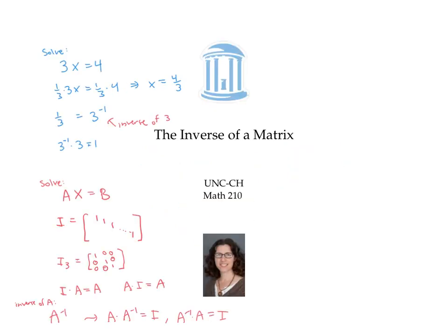In this video, we defined the inverse of a square matrix as the matrix that you multiply it by to get the identity matrix. We also computed the inverse of a matrix by sticking the matrix and the identity matrix together and converting this to reduced row echelon form. Finally, once we had the inverse of a matrix A, we used it to solve an equation of the form A times X equals B by multiplying both sides by A inverse.